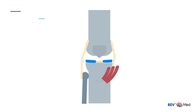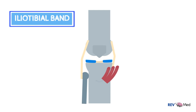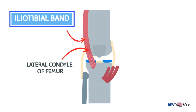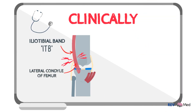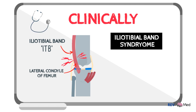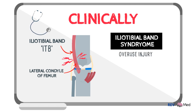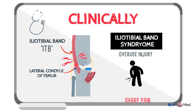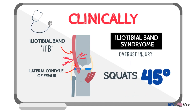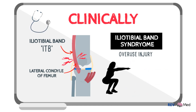The last structure to mention is the iliotibial band, which runs laterally over the lateral condyle and attaches to the anterolateral part of the tibia. The iliotibial band (ITB) can get irritated by friction at the point where it runs over the lateral condyle of the femur. This is known as iliotibial band syndrome (ITBS), a common overuse injury seen in runners and cyclists, causing sharp pain at the lateral condyle when squatting at 45 degrees or when bending and flexing.